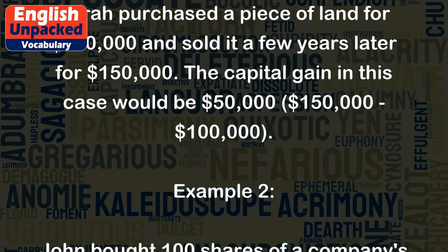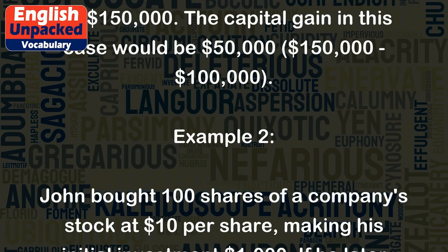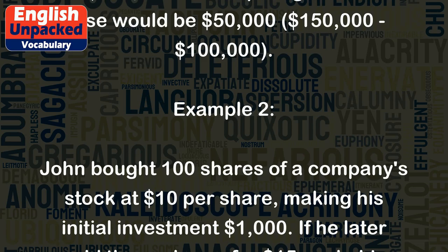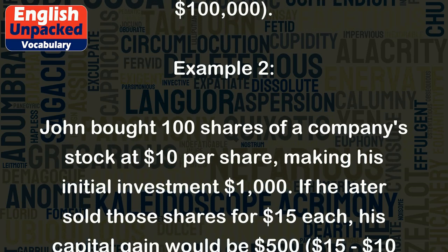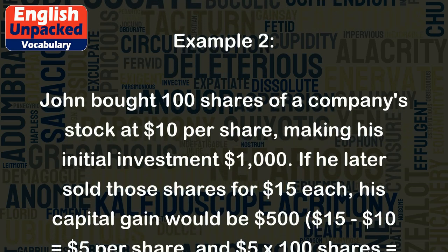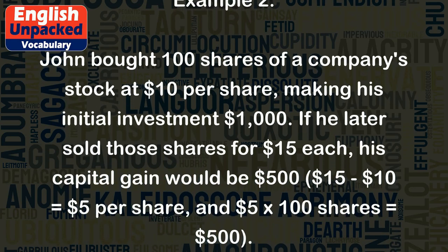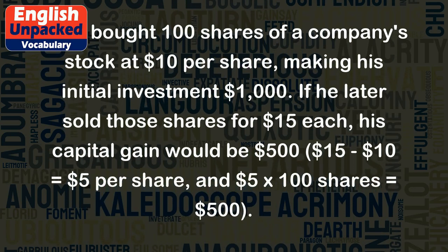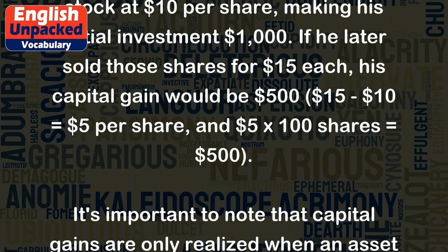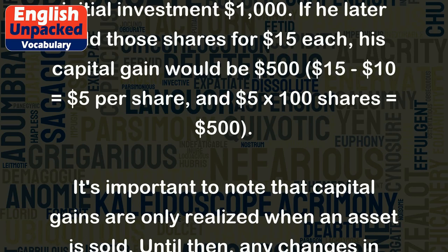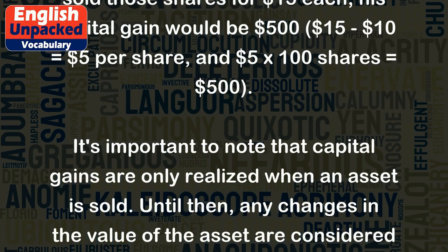Example 2. John bought 100 shares of a company's stock at $10 per share, making his initial investment $1,000. If he later sold those shares for $15 each, his capital gain would be $500 — $15 minus $10 equals $5 per share, and $5 by 100 shares equals $500.